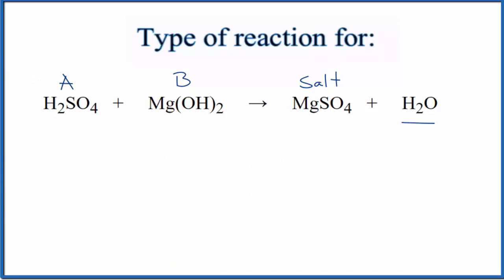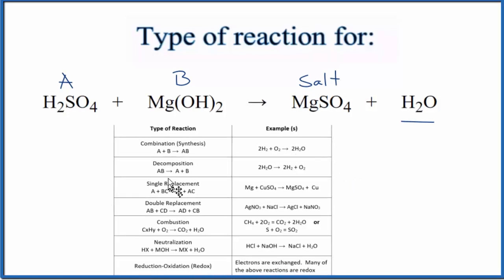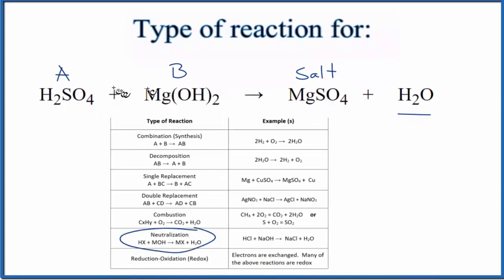We could also take a look at a table of common chemical reactions. These are common types of chemical reactions. As we look down, we know that it's a neutralization reaction because we have an acid and a base give us a salt and water.